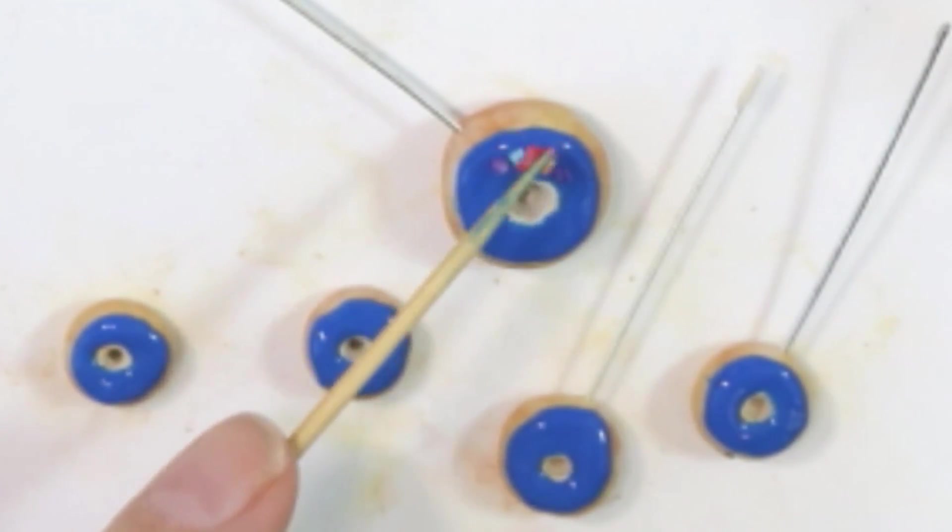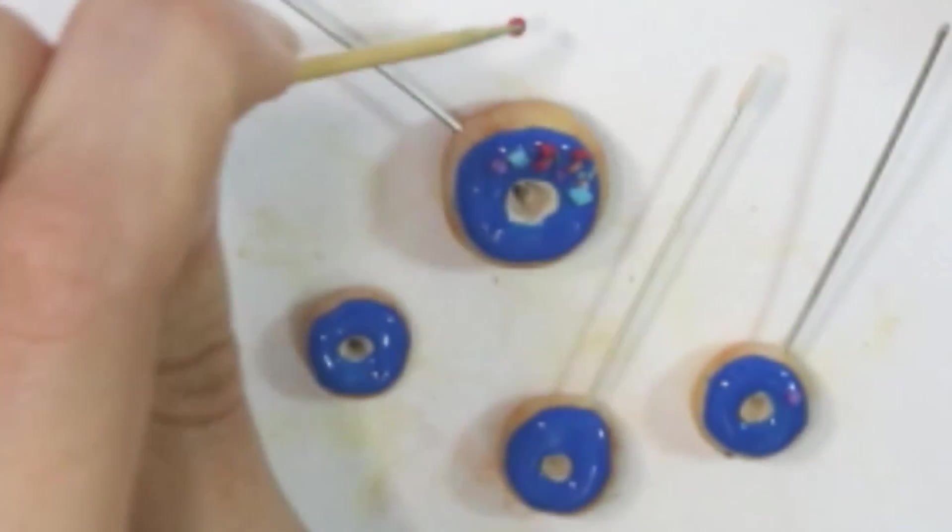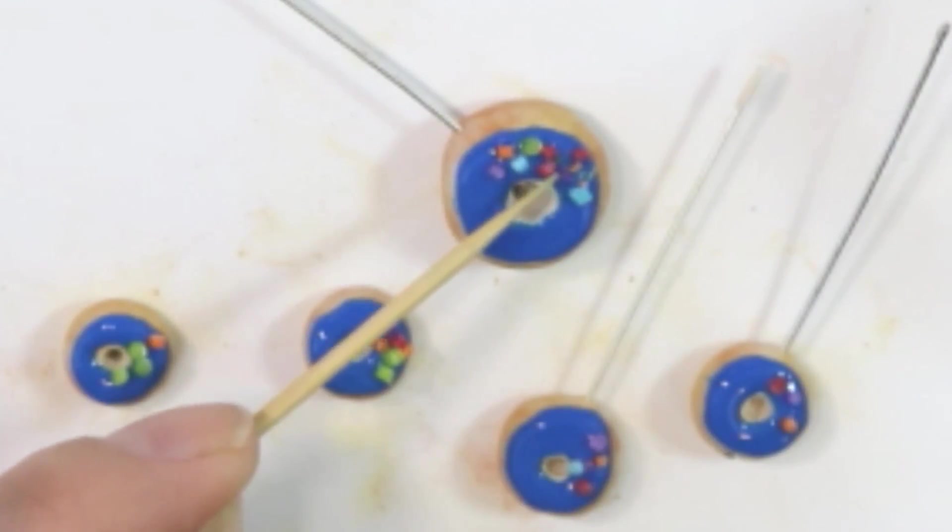Now we're adding on the sprinkles. I do have a separate video on how to make sprinkles which I'll leave in the description box below. We're just going to add on a generous amount of sprinkles.